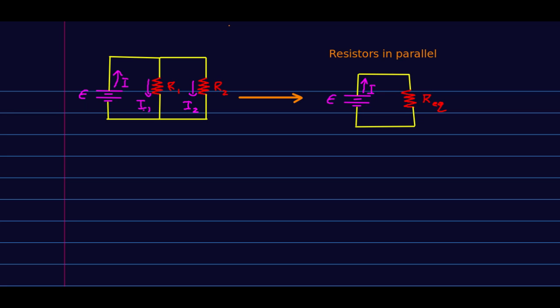However, note that it's no longer true that these currents are the same. What we have is a junction law, which says that the current into this junction, which is I, is equal to the sum of the currents out. Note that it's sometimes more convenient to sum up all the currents with the convention that currents in are positive and currents out are negative. That's totally equivalent.